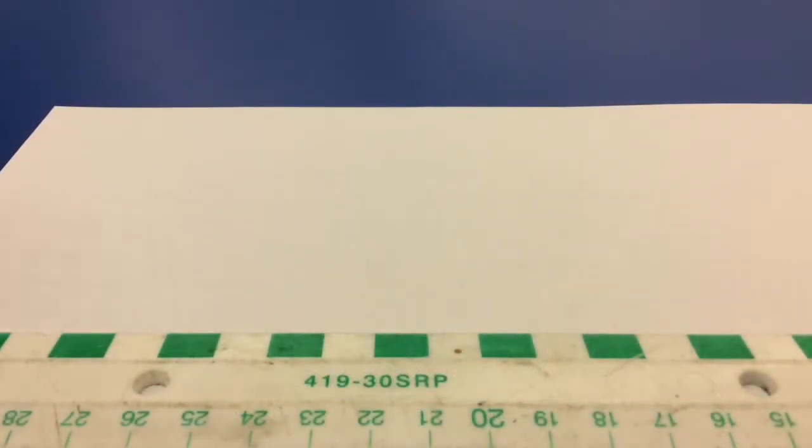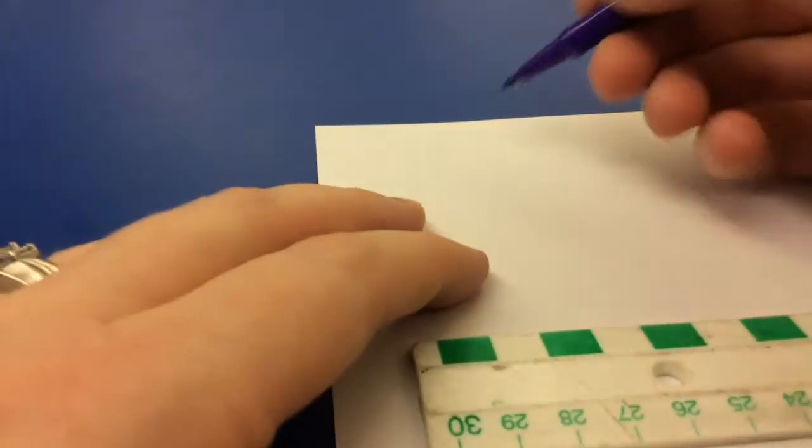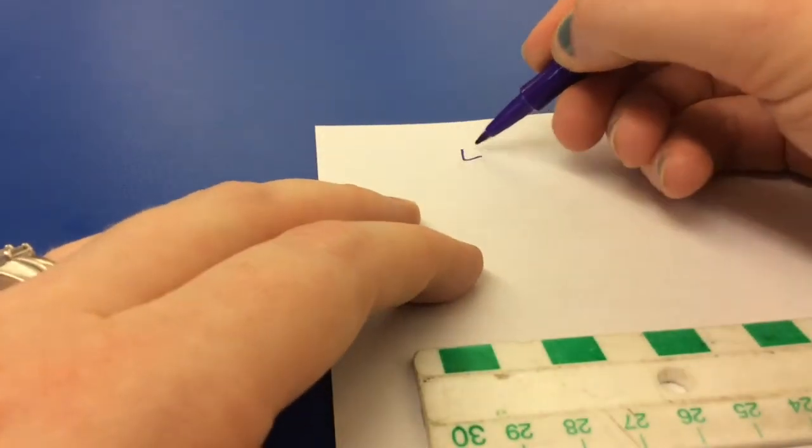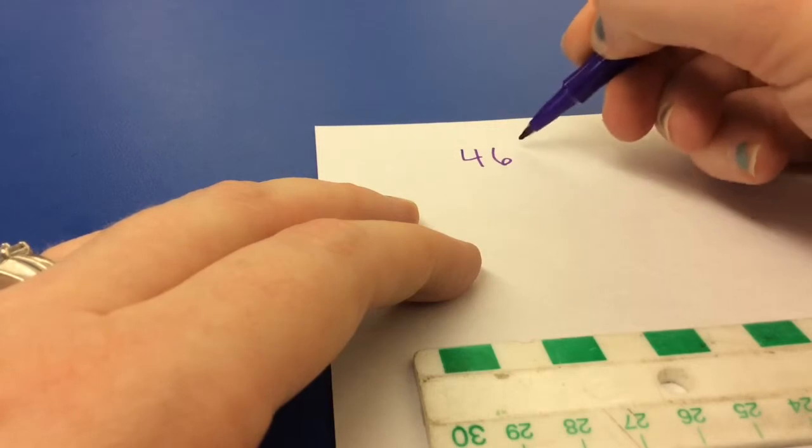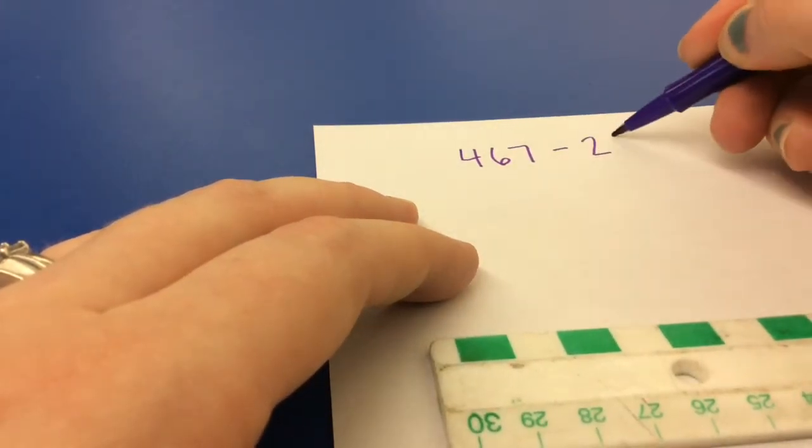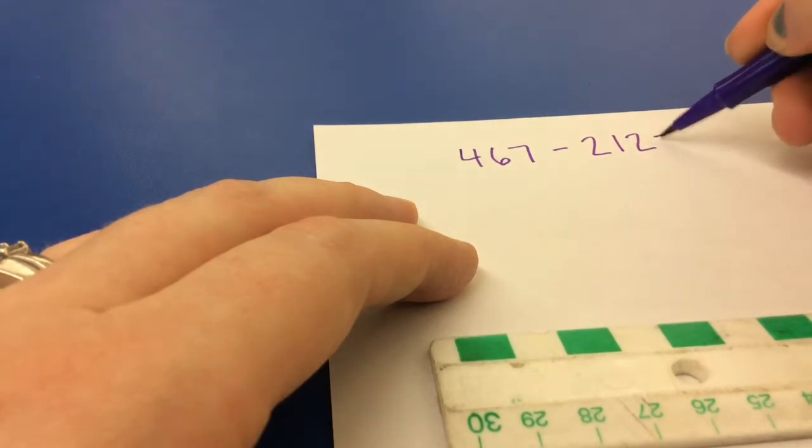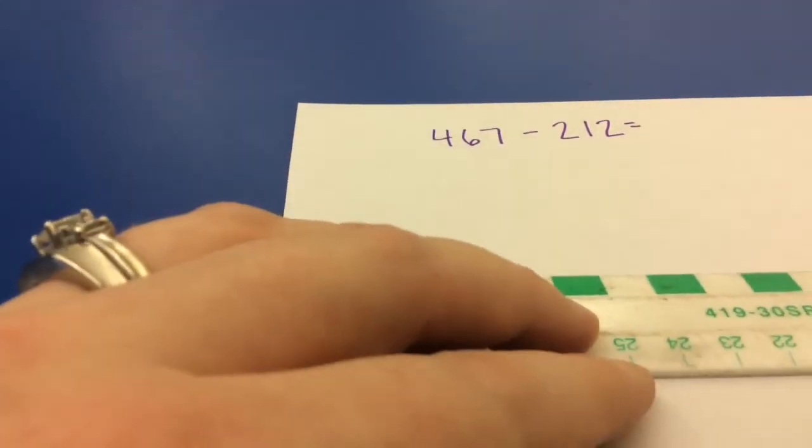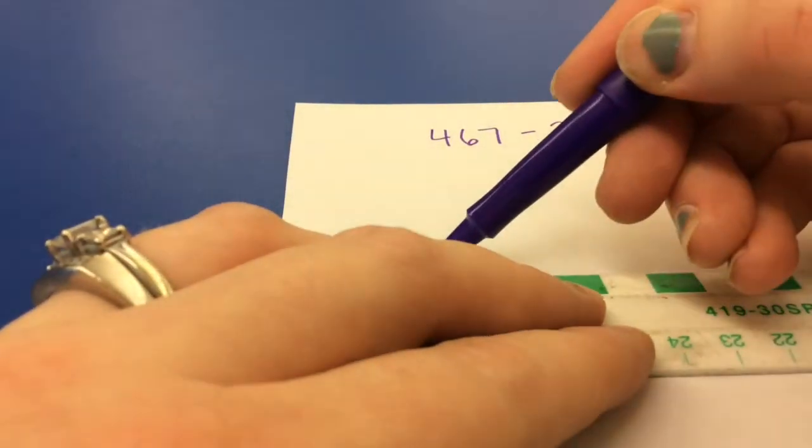Good morning, today we're going to look at how to use the open number line for subtraction. So if we start with a question of 467 minus 212, in order to do the open number line, the first thing you need to do is draw a line on your page.